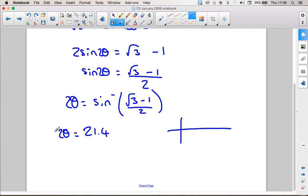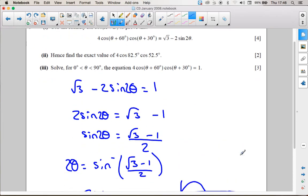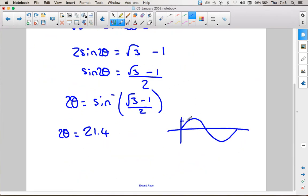Therefore, because of the 2 theta, there will be a second solution. Even though it only says between 0 and 90, there will be a second solution. So I'm just going to take...